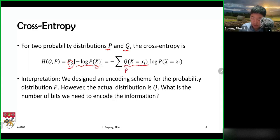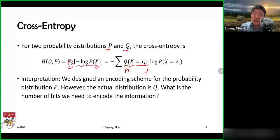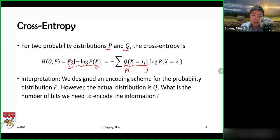So we replace what used to be the p distribution in the expectation with q. This is what we really encounter in the real world, because when you design an encoding schema, maybe you don't have all the information you need, or maybe the world has changed, so the probability of events has shifted since you designed the schema. The cross entropy asks: if we designed an encoding schema for distribution p, but the actual distribution we observe is q, what is the expected number of bits needed to encode events coming from q?